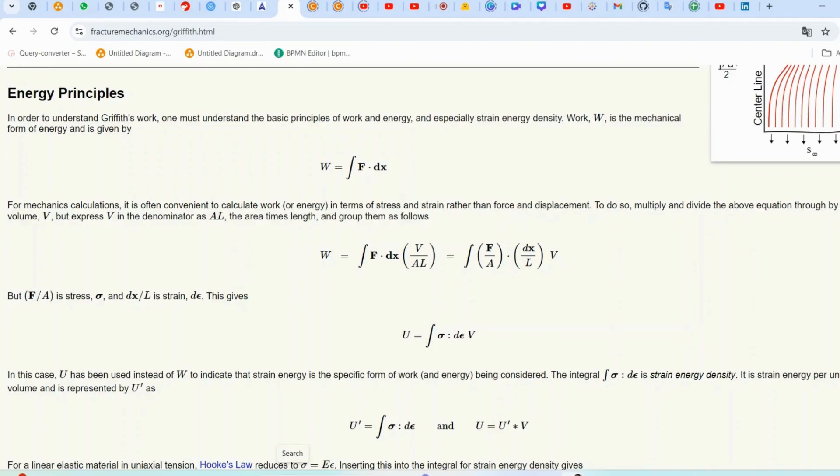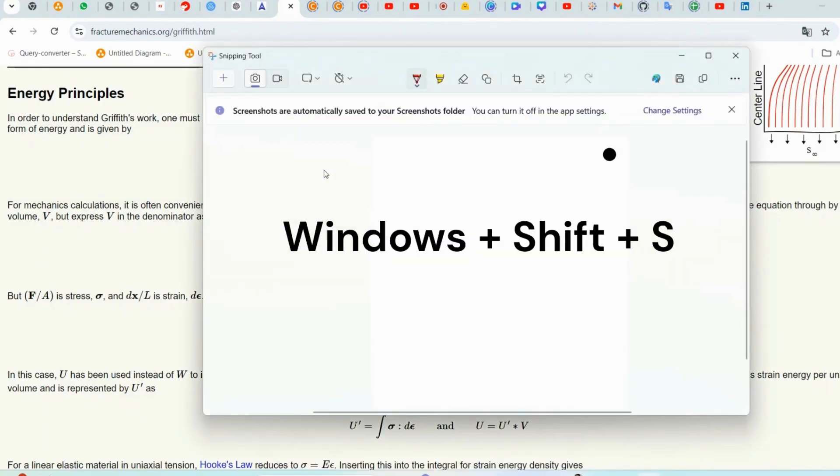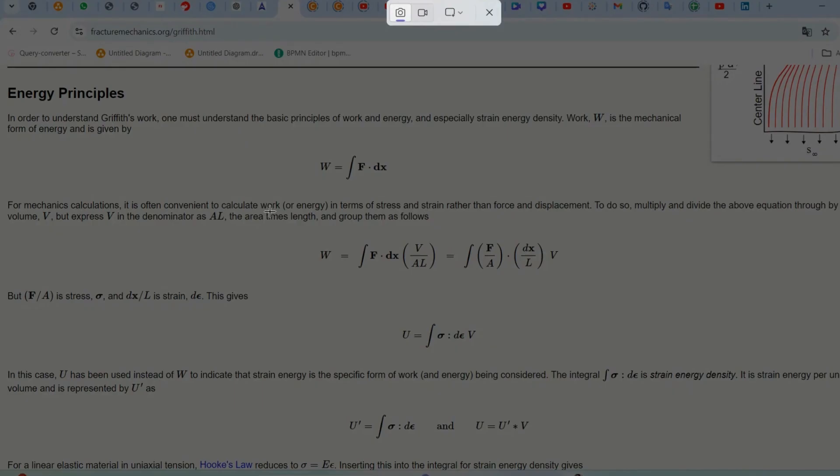For Windows users, open the Snipping Tool by searching for it in the Start menu or press Windows plus Shift plus S to directly open Snip and Sketch. Once your Snipping Tool is ready, drag the cursor to select the equation on the web page. Make sure the entire equation is highlighted properly.